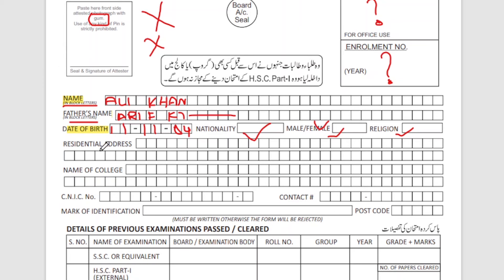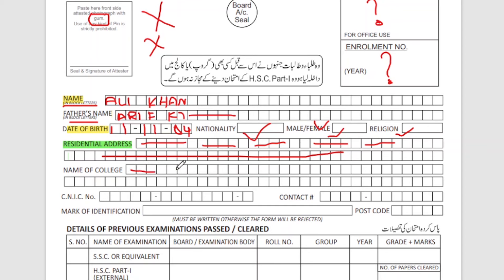An important issue from the enrollment form was the residential address. You have to take your electricity or gas bill and use that address to fill it in. Look at your campus area and fill accordingly. You also need to fill in the name of your college and the name of the university.